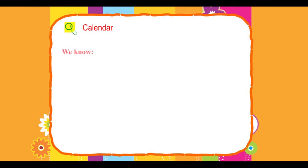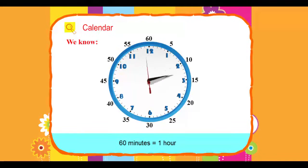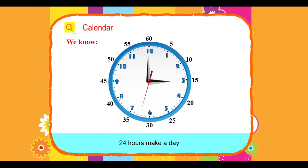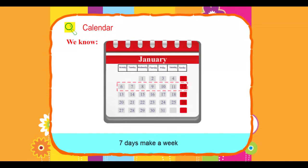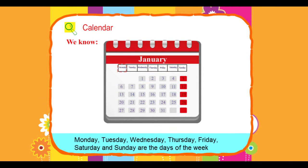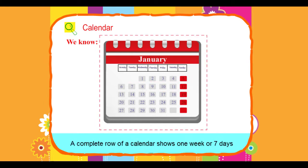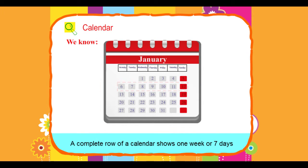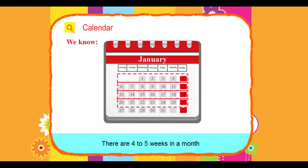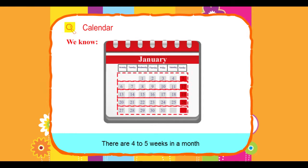We know 60 minutes equals 1 hour. 24 hours make a day. 7 days make a week. Monday, Tuesday, Wednesday, Thursday, Friday, Saturday and Sunday are the days of the week. A complete row of a calendar shows 1 week or 7 days. There are 4 to 5 weeks in a month.